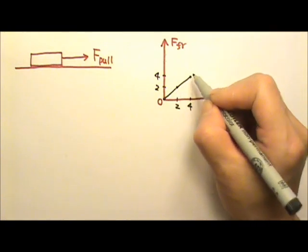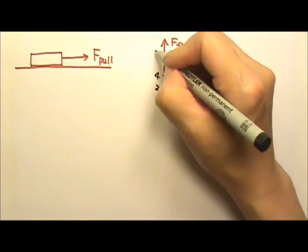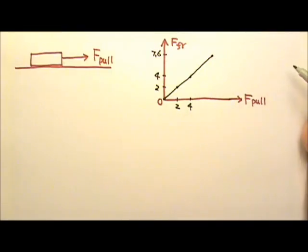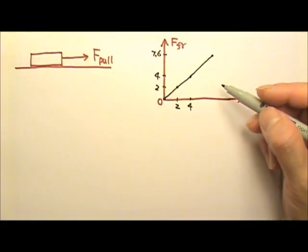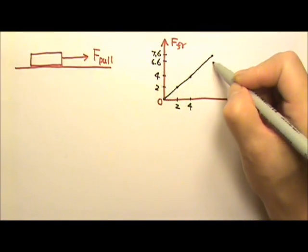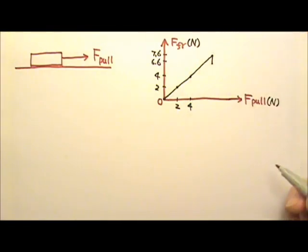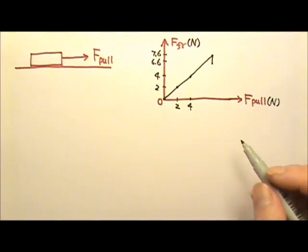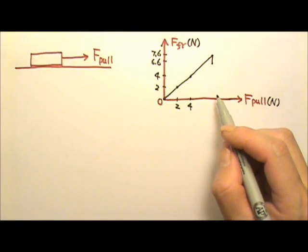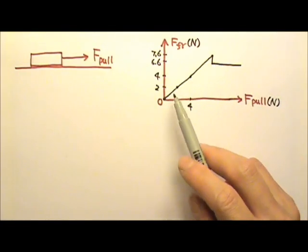So the graph went like this, and I kept on increasing my pull until it reached about 7.6 newtons. And then the box began to slide. At that moment, friction suddenly drops to about 6.6 newtons. It turns out that if I kept on increasing my pull past 7.6 newtons, the book will just accelerate while the friction would stay at 6.6 newtons. So the graph will look like this.